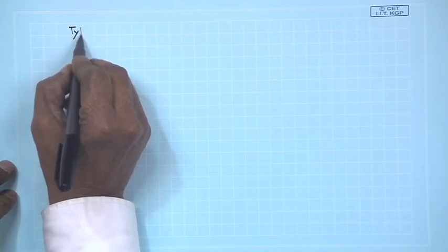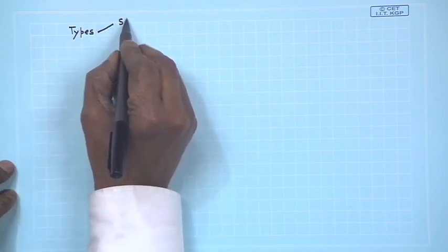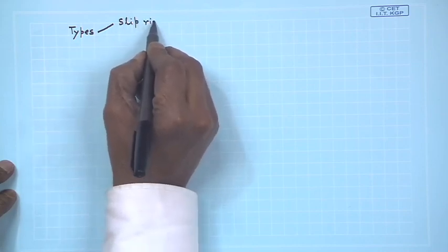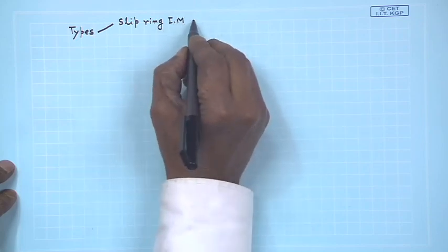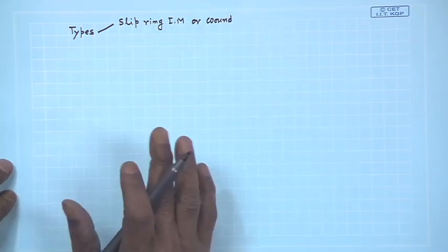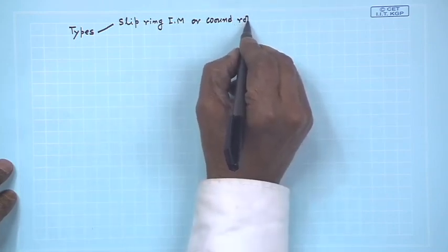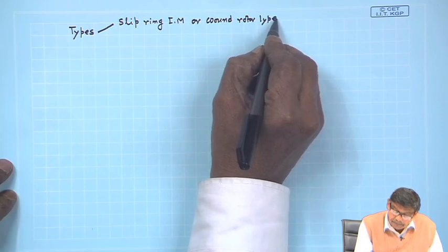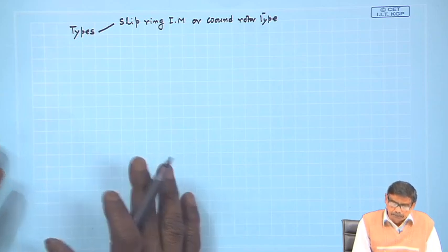Welcome. We were discussing the types of induction motors. One is called the slip ring induction motor, also called the wound rotor induction motor, because three-phase windings are distributed and used in the wound rotor. The stator windings are, of course, the same in both types.